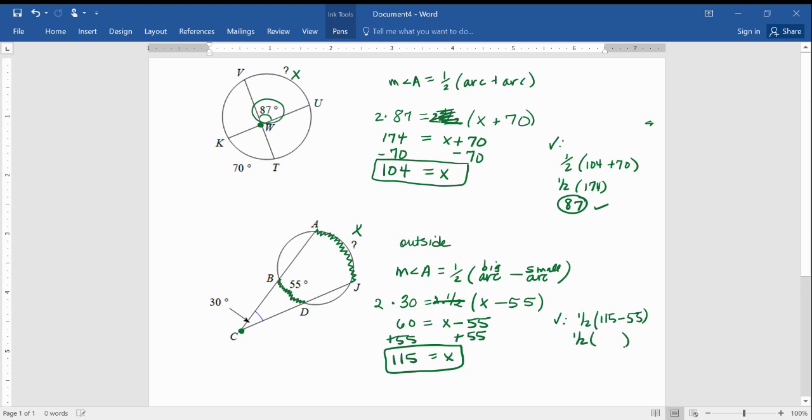So, let's just make sure this is checking. Okay? So, 115 minus 55. What do you know? It is 60. And half of that is 30. So, I'm feeling confident about this answer.